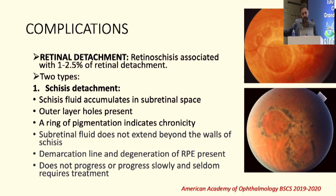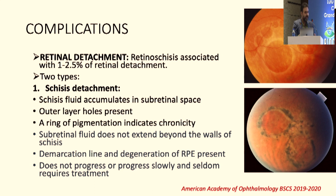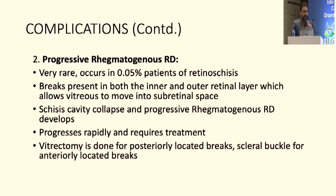A schisis detachment occurs when you have multiple outer layer holes in the area of the schisis, resulting in retinal detachment within the schisis layer but not beyond it. It stays there for a very long time — it's a localized, round retinal detachment with pigmentation 360 degrees around it. These progress extremely slowly, if ever, to retinal detachment and require observation. What we want to intervene for is the second variety: the progressive rhegmatogenous RD.